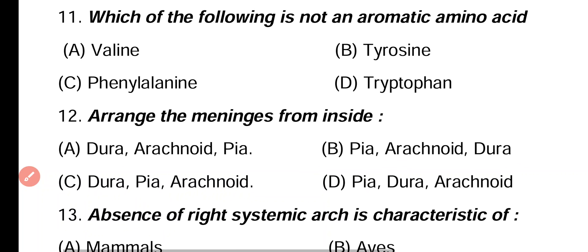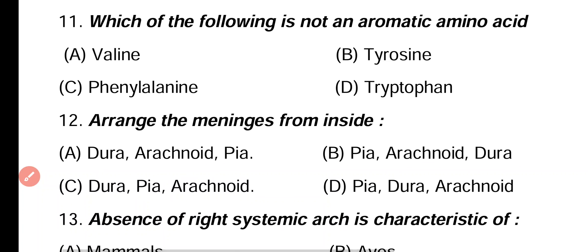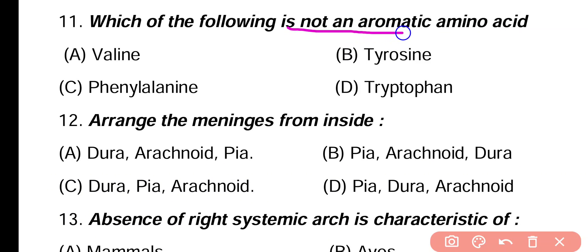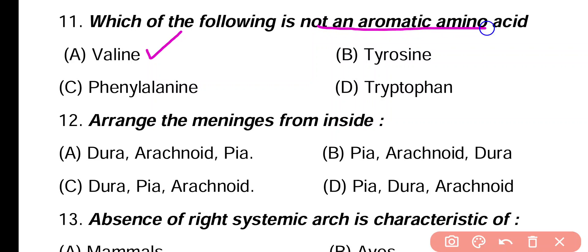Question 11. Which one of the following is not an aromatic amino acid: valine, tyrosine, phenylalanine, tryptophan? Correct answer is option A. Valine is not an aromatic amino acid.